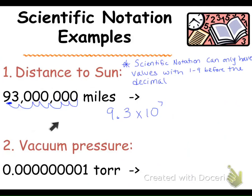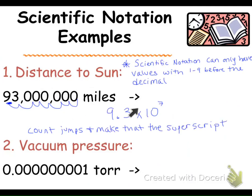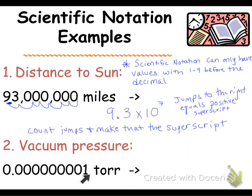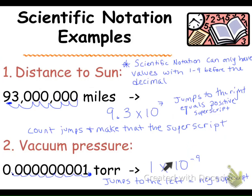Because I've got a really big number, I'm going to have a positive integer on that superscript. You count the jumps — it was 7 jumps — so the superscript is going to be 7. Because I jumped to the right it's a positive superscript. For a small number, you want to start the decimal point so the leading digit is between 1 and 9. We jumped 9 times to the left, and because we jumped to the left it's going to be a negative superscript.